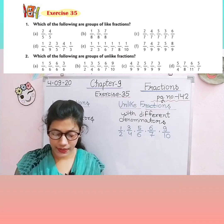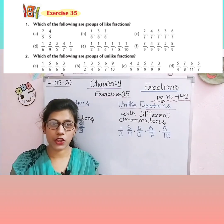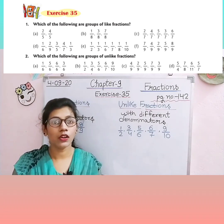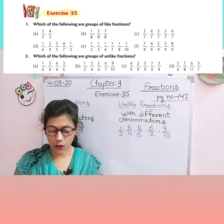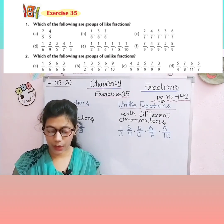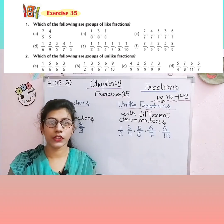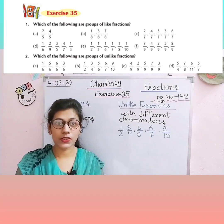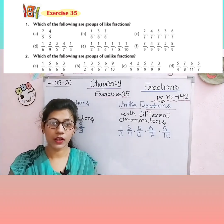Question number one: which of the following are groups of like fractions? Aapko fractions ko dekhna hai aur find out karna hai kaun sa like fraction hai — jinke denominators same hain woh like fractions hain. Question number two: which of the following are groups of unlike fractions? Find out karna hai kaun sa fraction unlike fraction hai — jisme numerator aur denominator dono different hain. Exercise 35 ke questions ko aap apne homework copy mein homework ke roop mein solve karoge.